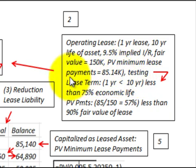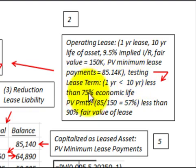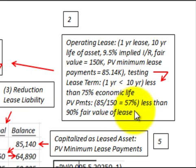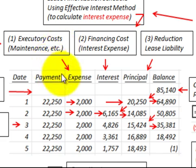Testing this lease: the lease term is one year, which is less than the ten-year economic life of the asset, so that means it's less than seventy-five percent of the economic life — making it an operating lease. Then the present value of the payments, $85,000 divided by $150,000, gives us fifty-seven percent, which is less than the ninety percent of fair value that would be required for it to be a capital lease.